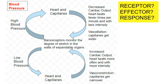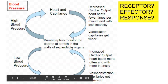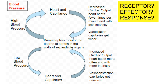Another example is blood pressure. You have baroreceptors, which monitor the degree of stretch in the walls of expandable organs. If your blood pressure gets too high, your heart and capillaries decrease cardiac output — the heart beats fewer times per minute with less intensity, and your capillaries get wider in order to lower your blood pressure. If your blood pressure gets too low, the heart and capillaries kick in causing vasoconstriction — the capillaries get narrower, increasing the pressure, and the heart beats more often with more intensity to bring your blood pressure back up.